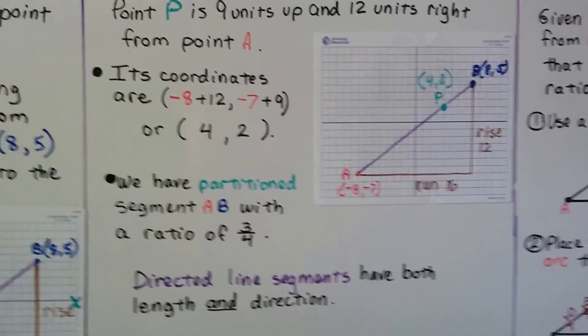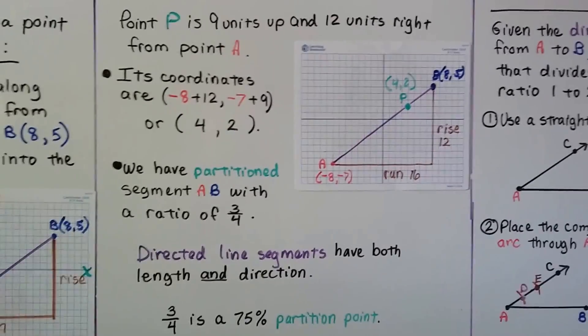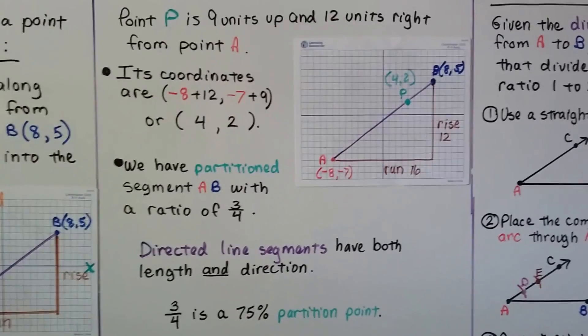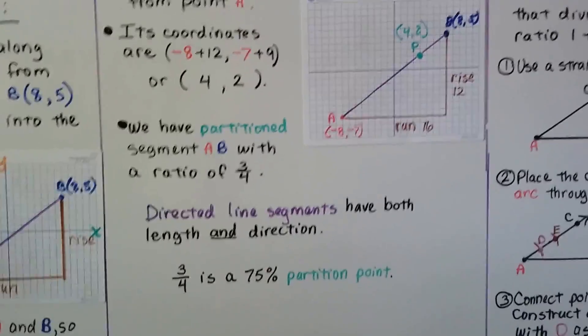Directed line segments have both length and direction. And 3 fourths is a 75 percent partition point. If it was a half, we'd have a 50 percent partition point. And if it was a fourth, we'd have a 25 percent partition point.